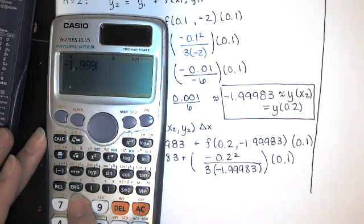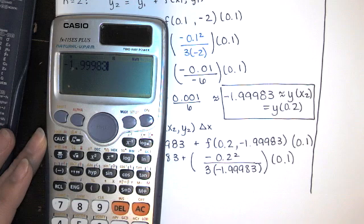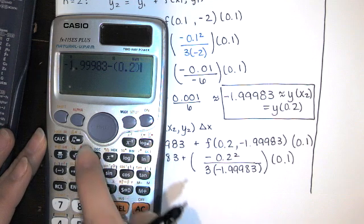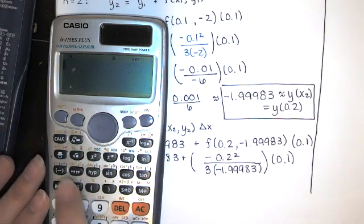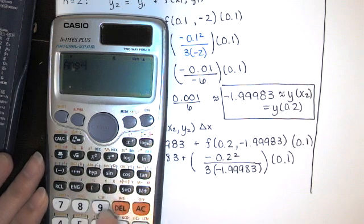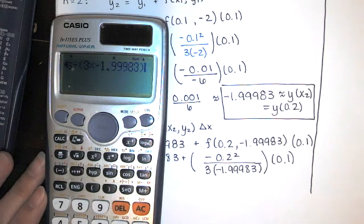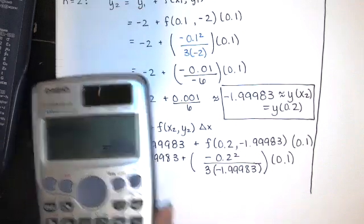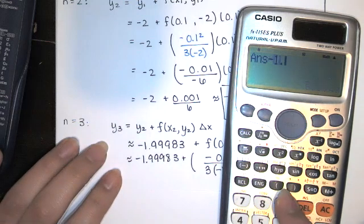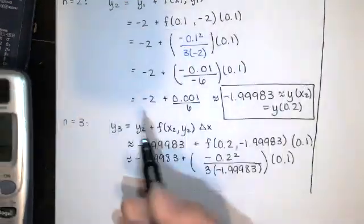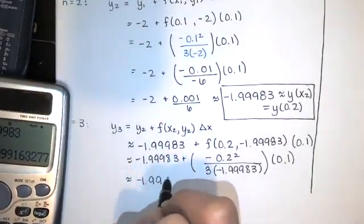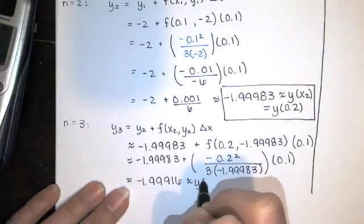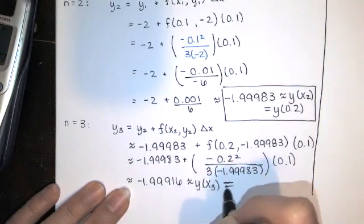Using our approximations, we compute 0.2 squared divided by 3 times negative 1.99983, multiply by negative 1, and then by 0.1, and add that to negative 1.99983. y sub 3 is approximately negative 1.99916, which is approximately equal to y at x3, that is y(0.3).